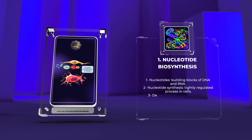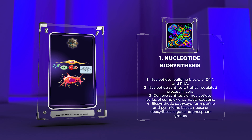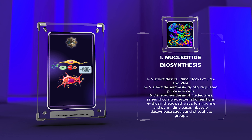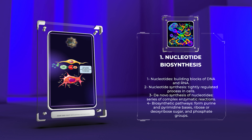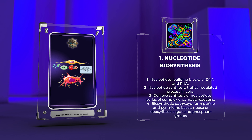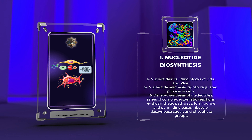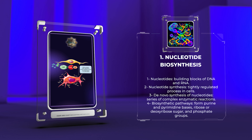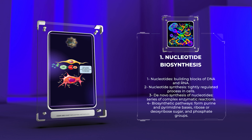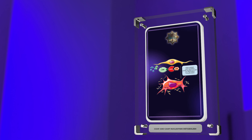Nucleotides serve as the building blocks of DNA and RNA, and their synthesis is a tightly regulated process in cells. The de novo synthesis of nucleotides involves a series of complex enzymatic reactions. Starting with simple precursors such as amino acids, sugars, and carbon dioxide, the biosynthetic pathways form the purine and pyrimidine bases, ribose or deoxyribose sugar, and phosphate groups. Each step of this pathway is catalyzed by specific enzymes, and the regulation of these enzymes is crucial to maintaining the balanced production of nucleotides.